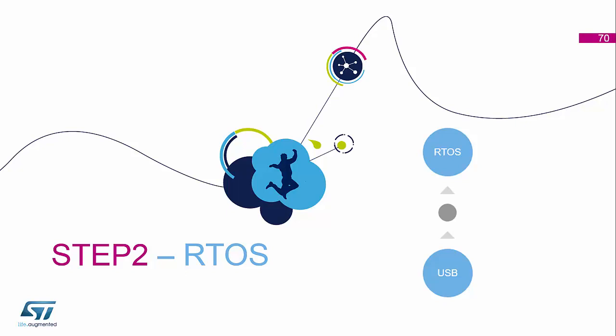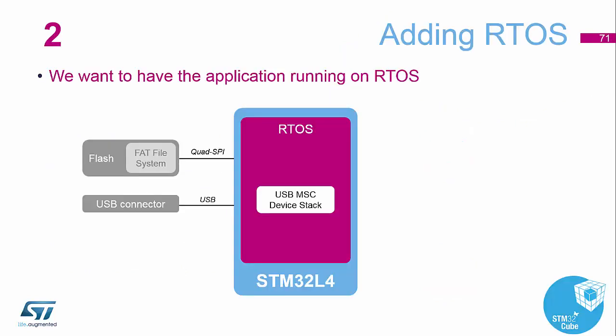Step one is complete, so we'll now start on step two. Step two is going to add the FreeRTOS operating system to our project. This is going to help us move forward with each subsequent task being added to the RTOS as an individual task or thread within the system.